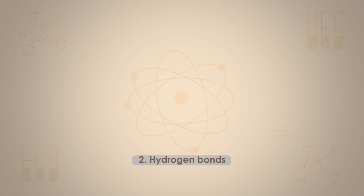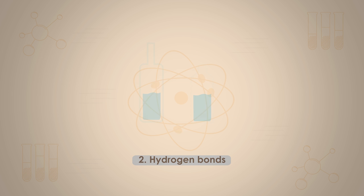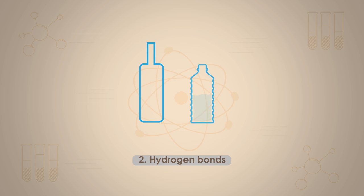Even though a hydrogen bond has only about 5% the strength of a covalent bond, it does have a significant effect on the physical properties of compounds. For example, were it not for hydrogen bonds, both water and alcohol would be gases at room temperature and pressure.